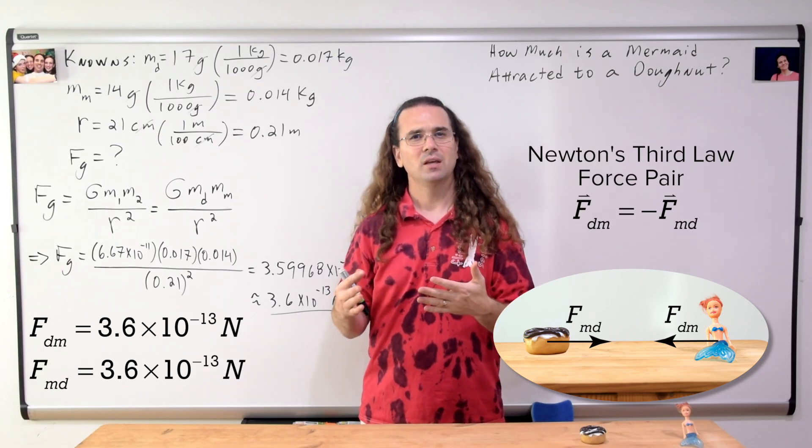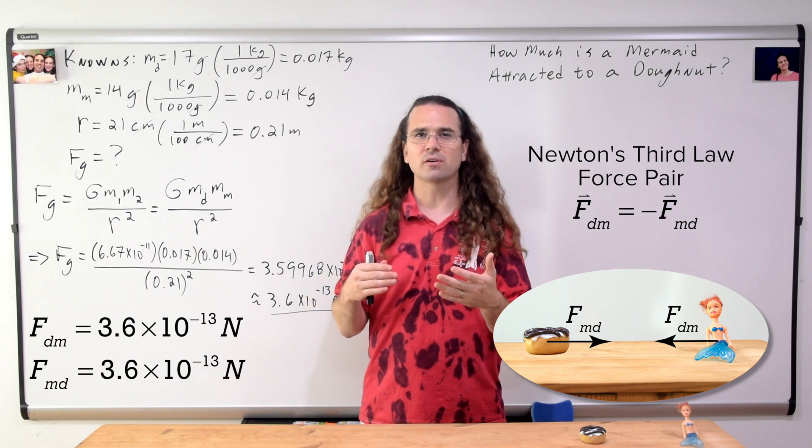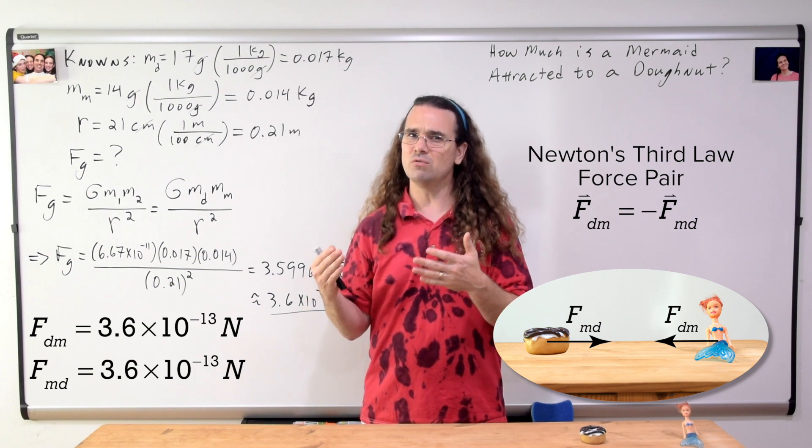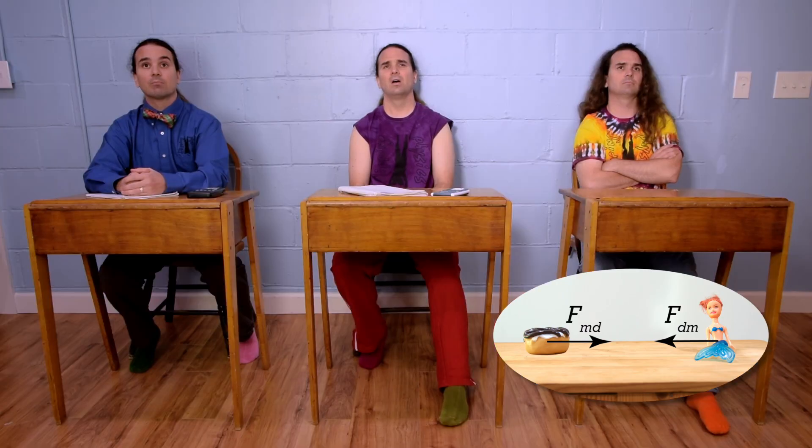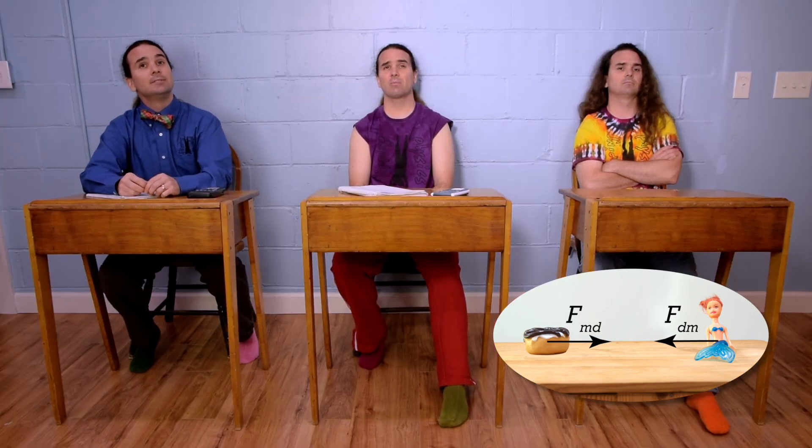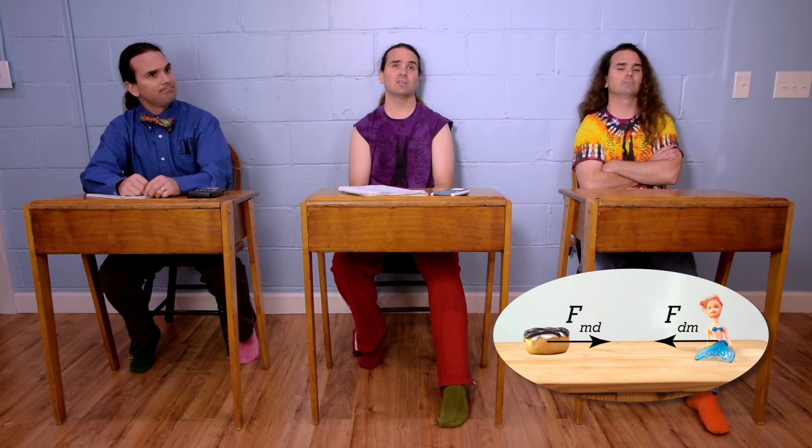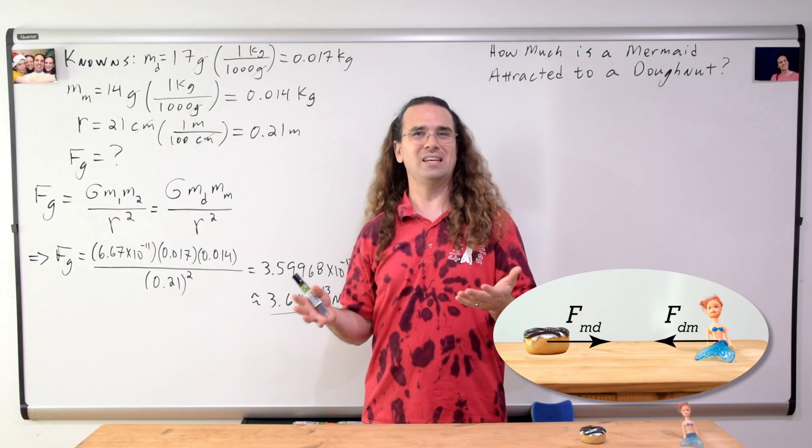Bobby, if the mermaid and donut are being pulled toward one another, why are they not currently moving towards one another? The maximum force of static friction must be larger than 3.6 times 10 to the negative 13 Newtons, so the objects do not move. That is a great explanation.